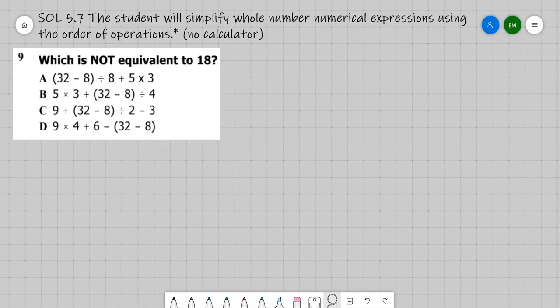Okay boys and girls, so this is our last problem in the non-calculator part of the benchmark. It's number 9, which is not equivalent to 18. And it's SOL 5.7, the student will simplify whole number numerical expressions using the order of operations.